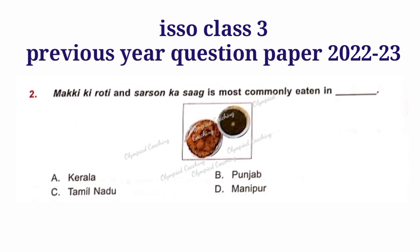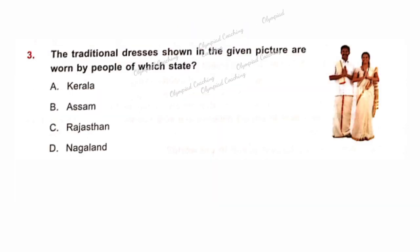Question No. 2: Makhi ki roti and sarson ka saag is most commonly eaten in which state? Option B is correct — Punjab. Question No. 3: The traditional dresses shown in the given picture are worn by people of which state? Option A is correct — Kerala. The picture shows Mundu and Neriyathu, which are worn by the people of Kerala.